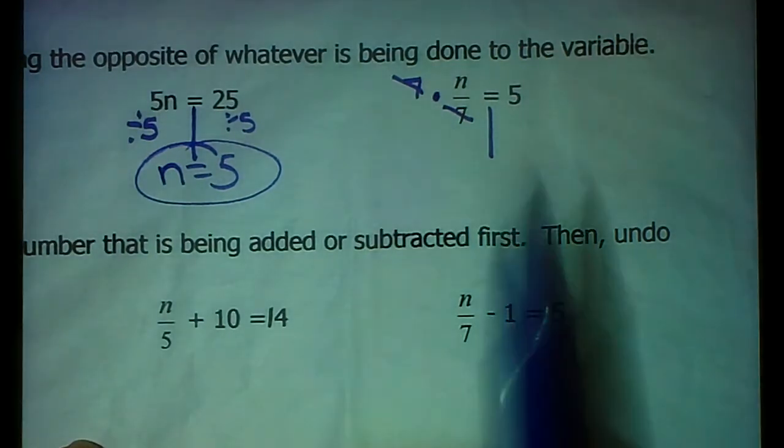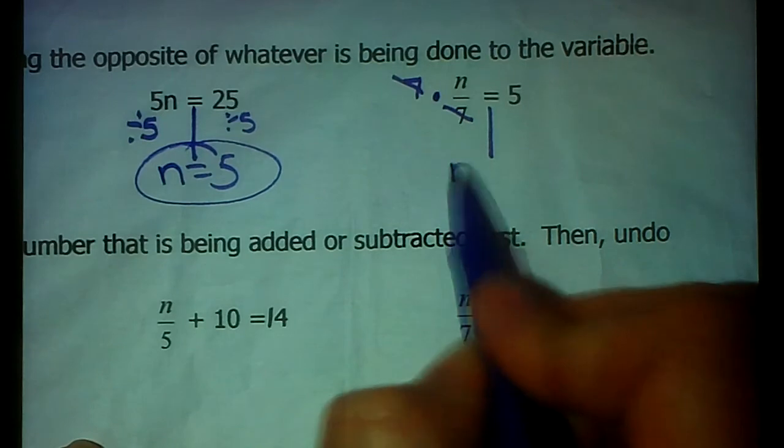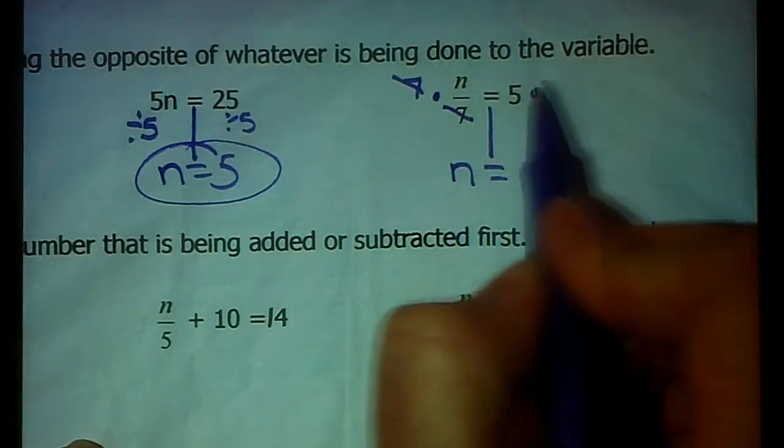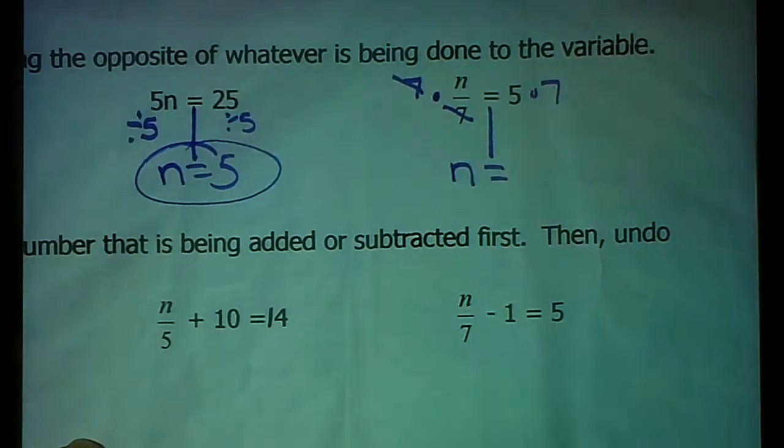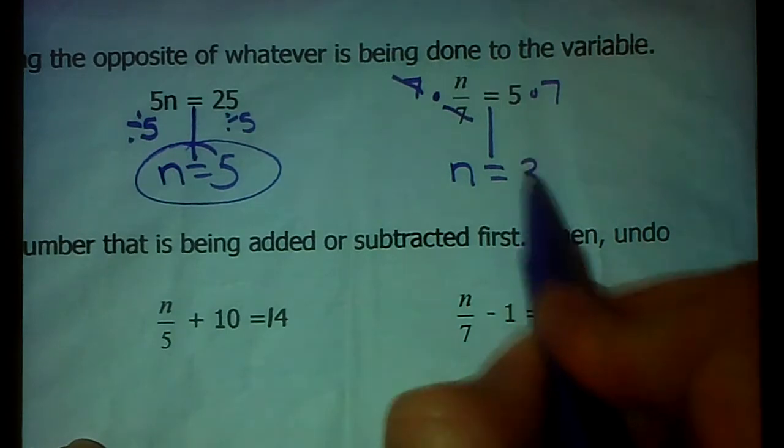So now, literally, do you see that N is all by itself? So that means I have to multiply five by seven as well, because that's what I did on the other side. That makes 35. So N is 35.